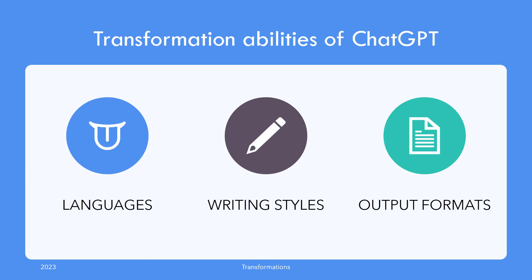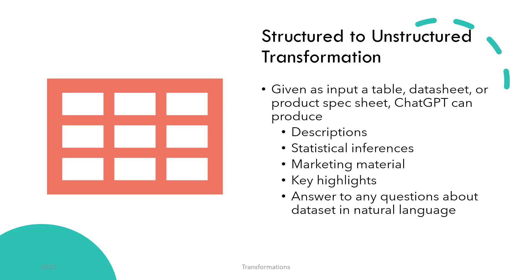Transformation is the task of giving JADGPT some input and getting some other type of result. Let's talk about structured to unstructured transformation.